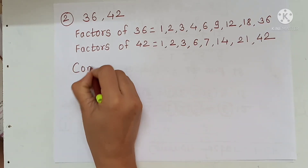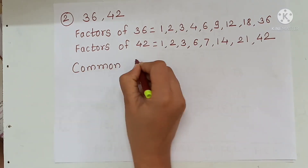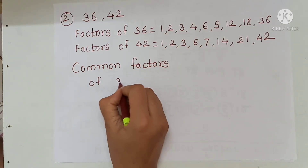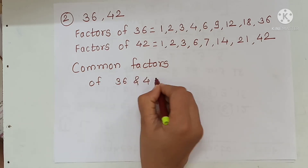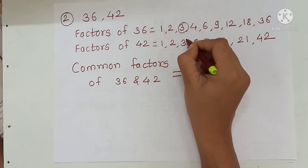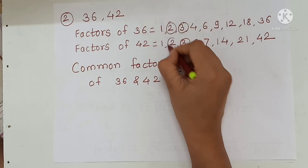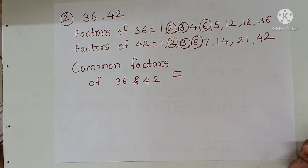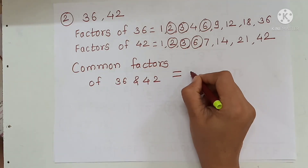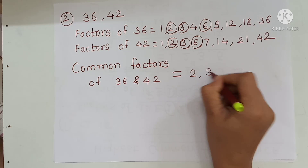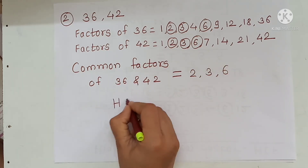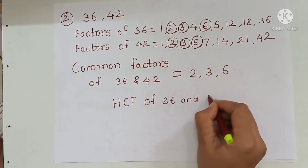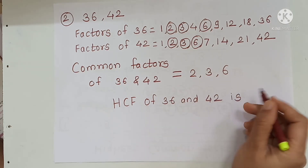Now we have to write common factors of 36 and 42. Common factors are 1, 2, 3, and 6. So HCF of 36 and 42 is 6.